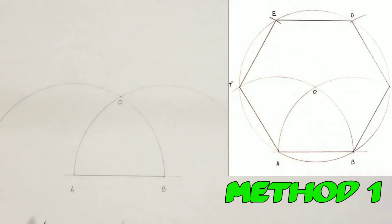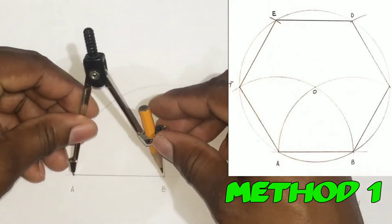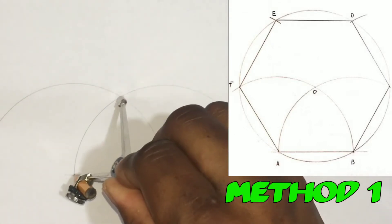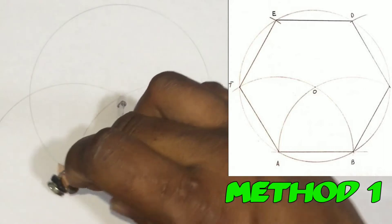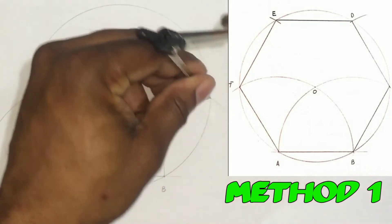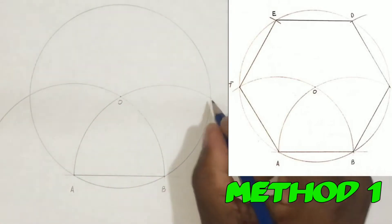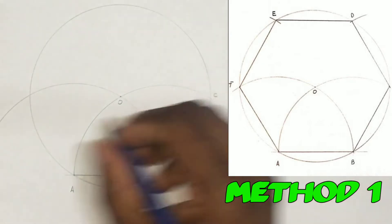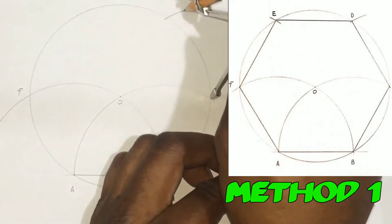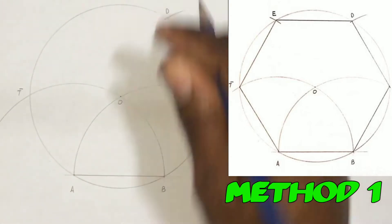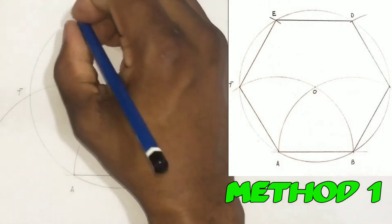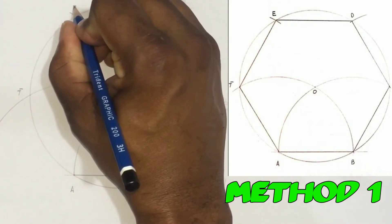O will now be the center for our compass, and we will draw a circle that will touch point A and also point B. We will now set our compass to 60 millimeters, or to A-B. Then we will identify point C and point F. From C as center, we will scribe an arc to cut the circle. We will also use F as center and scribe another arc to cut our circle. We will label these points E and D.